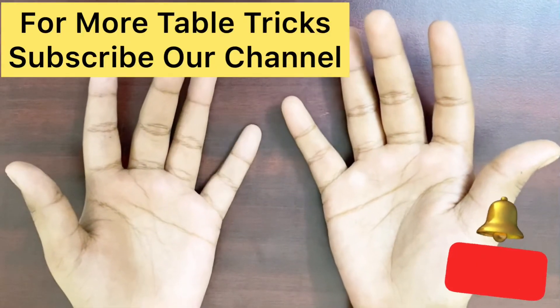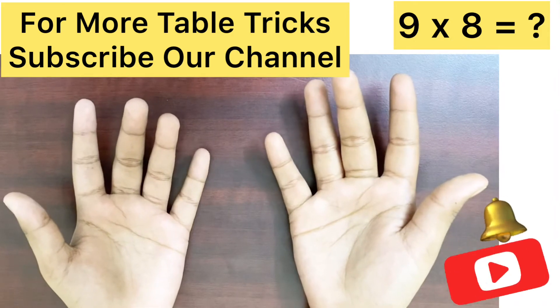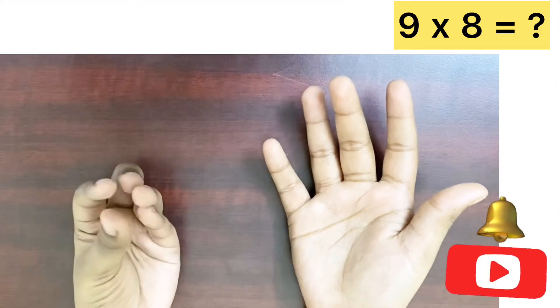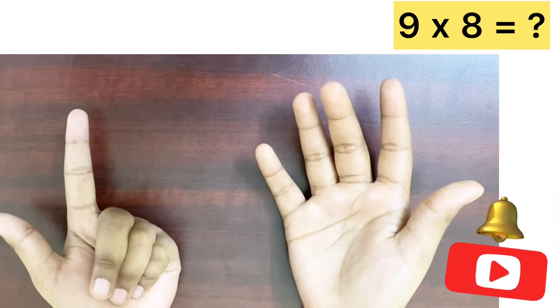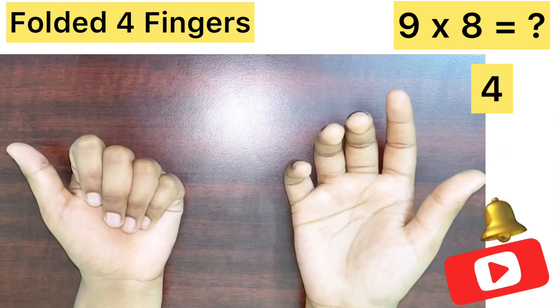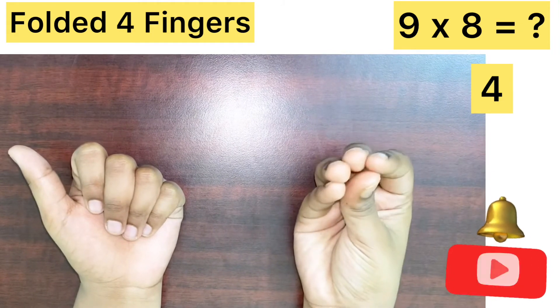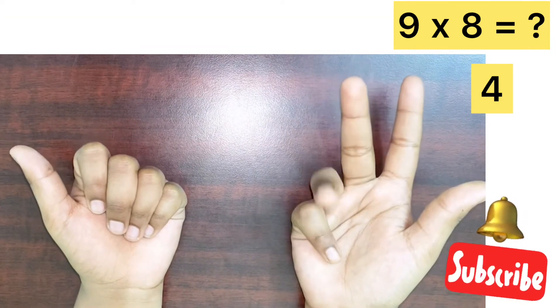Okay, let's practice again. 9 multiplied by 8. First, fold your left hand fingers till the number 9 down. 6, 7, 8, 9. Now, fold your right hand fingers till the 8 down. 6, 7, 8.